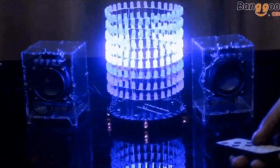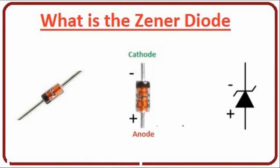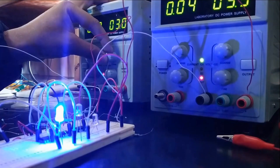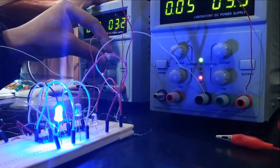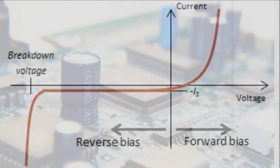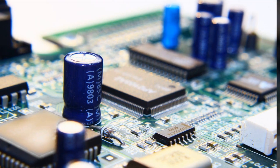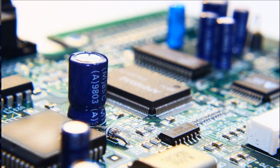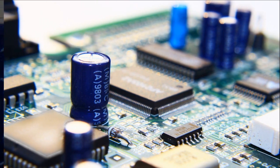Next, we have Zener diodes. These are a bit like traffic cops for electricity. They regulate voltage in an electronic circuit, ensuring that the voltage stays within a specific range. This is essential in protecting sensitive electronic components from voltage spikes.